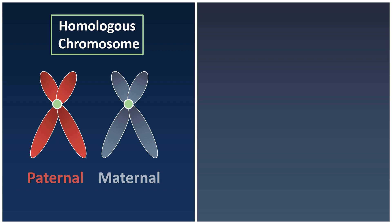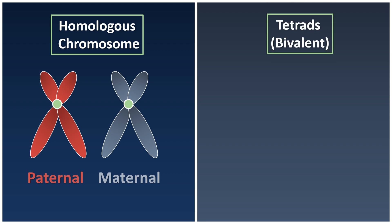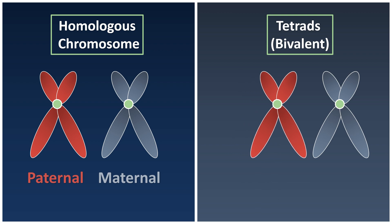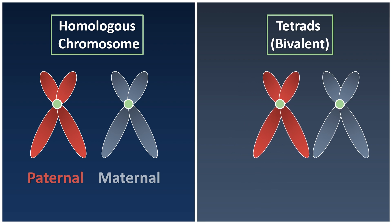And whenever they pair up together in cell divisions, we consider it as tetrads or bivalent. So this pairing up process is what we call synapsis, which will be learned later on.